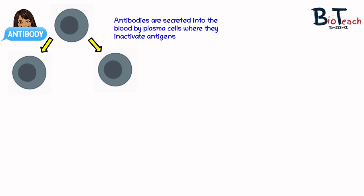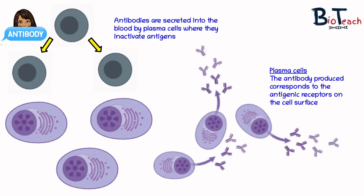The plasma cells that have been created will secrete antibodies specific to the antigen that stimulated their development. Each plasma cell will only live for a few days but can produce around 2,000 antibody molecules per second. During development, any B-cells that react to the body's own antigens are selectively destroyed in a process that leads to self-tolerance, or the acceptance of our own body's tissues.